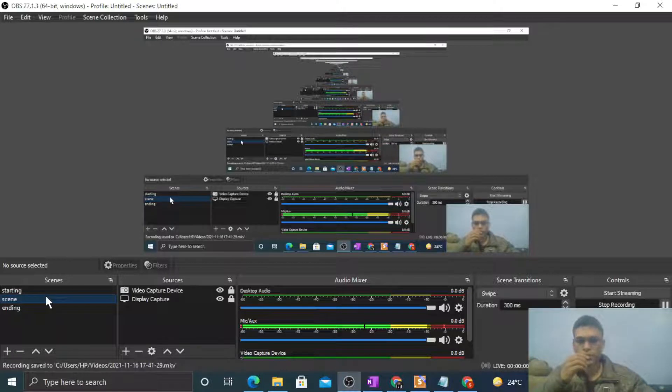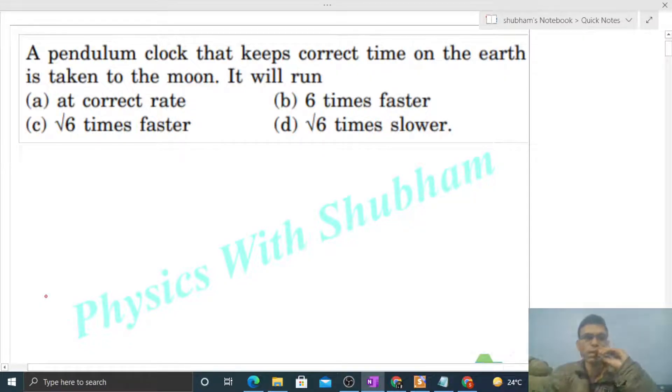Okay, hi everyone. So today let's discuss this interesting problem. It says a pendulum clock that keeps the correct time on the earth is taken to the moon. It will run fine. So let's say Earth and Moon.